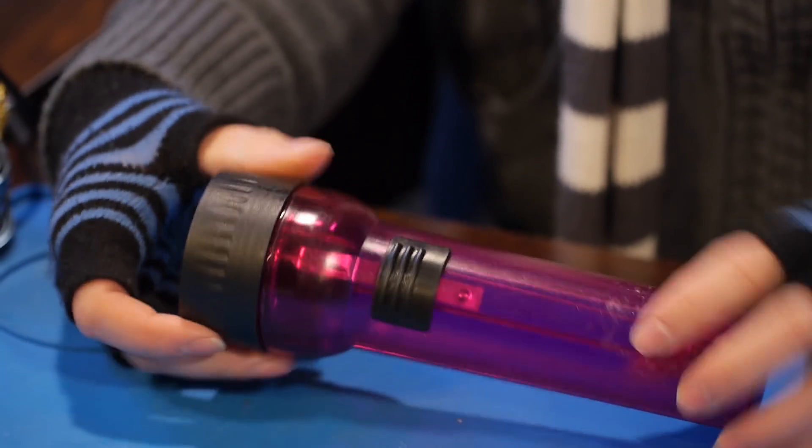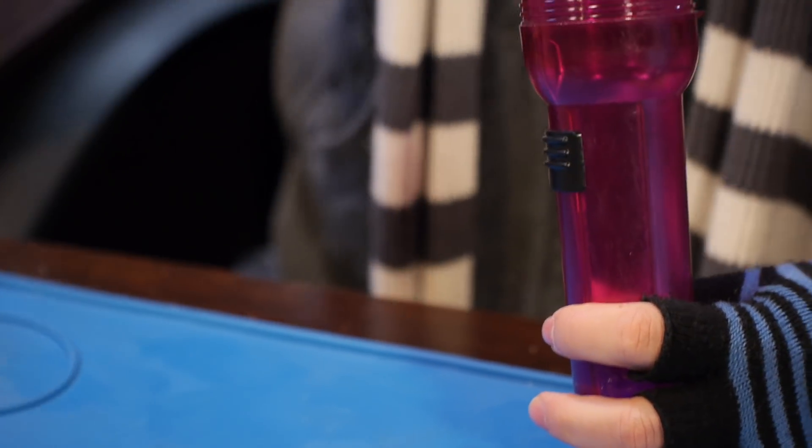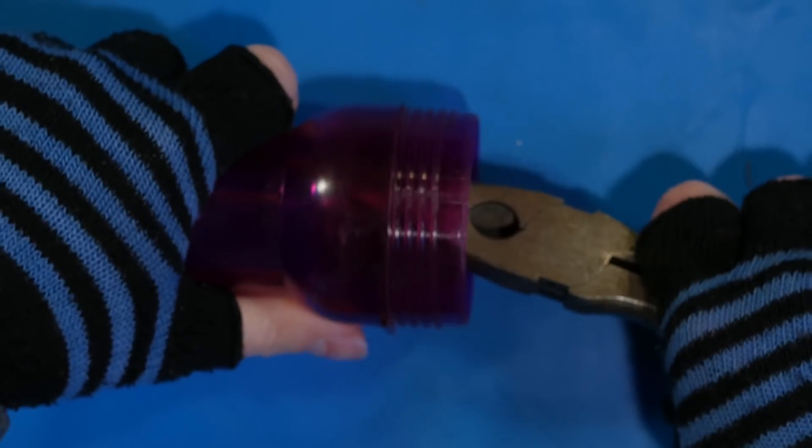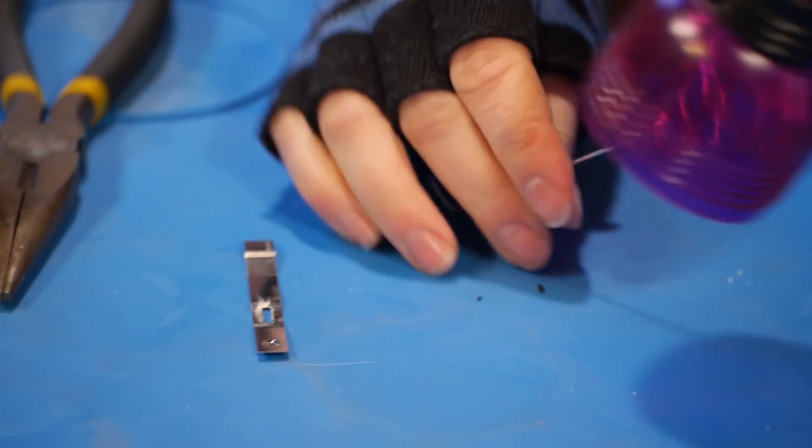Next, we need to take apart our flashlight. We're going to pull the switch and the spring out. There we go.